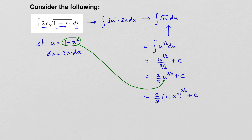Why are we doing this? It's because we start out with a function that is rather complicated. But by making a simple substitution and then computing the differential for that substitution, we take a more complicated integral and turn it into a very simple one. So let's go over the substitution rule, and then we'll do some examples.